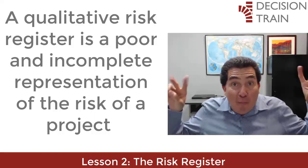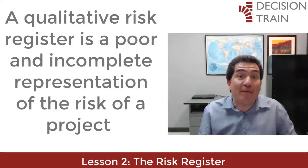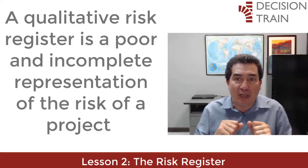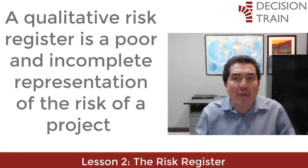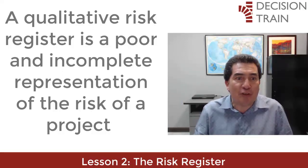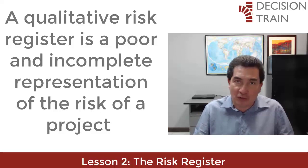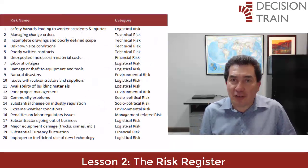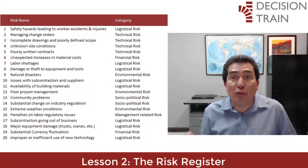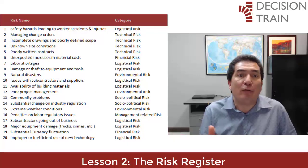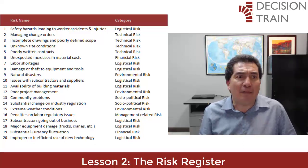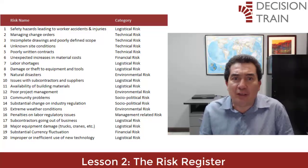We will argue with an example why a qualitative risk register or heat map that only tries to multiply frequency by severity to obtain a risk score is a very poor and incomplete representation of the risk of a project. In our example, we start with a list of risks. Take a look at the list of 20 present hazards already identified for this particular civil construction project. We will not delve into the previous steps of creating this list.